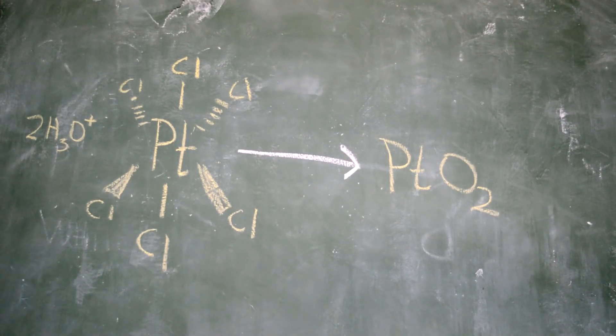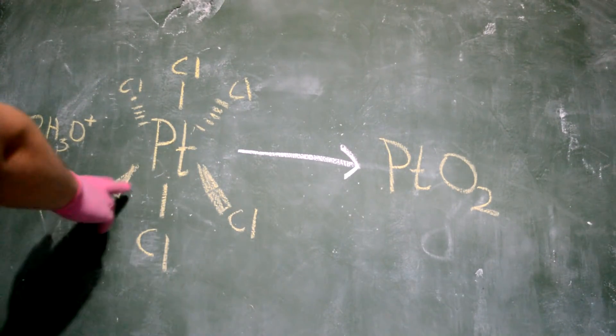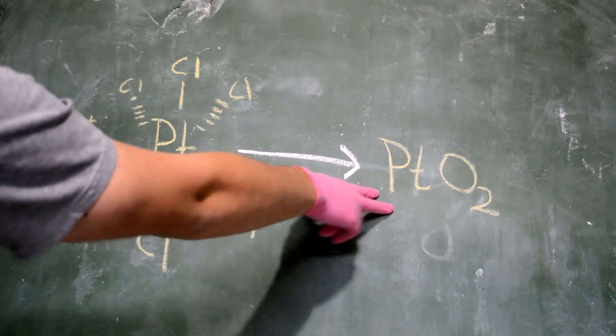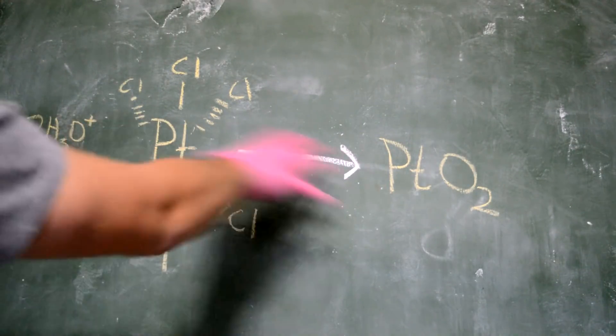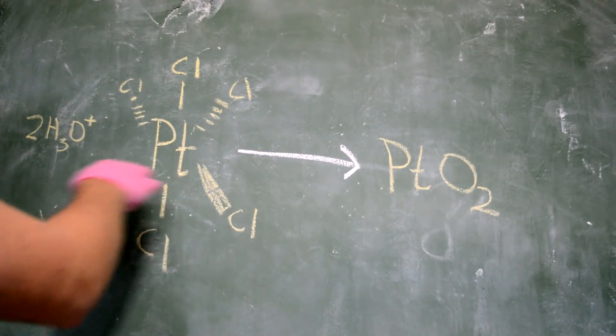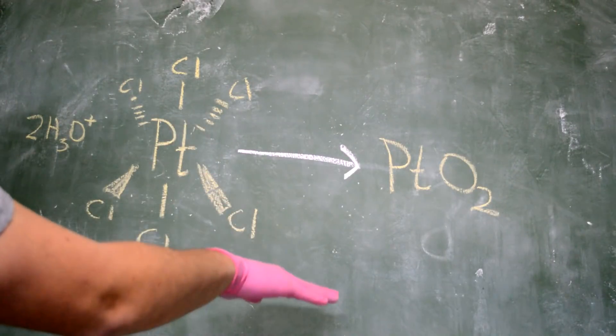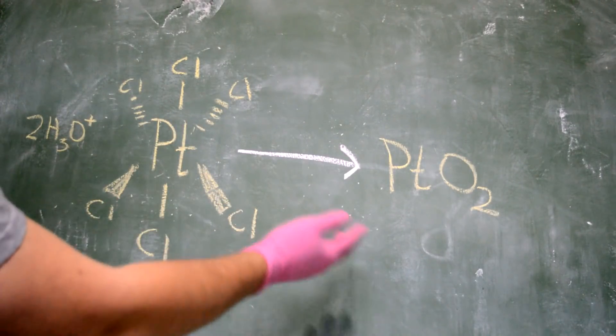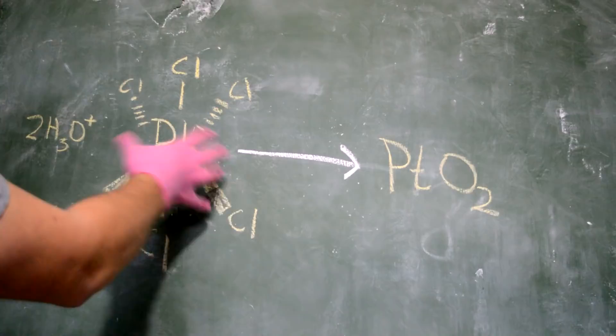All right, hello again. So today we're going to be turning chloroplatinic acid into platinum oxide. And this reaction isn't that easy to do, surprisingly, because platinum is quite far down, just past gold in the periodic table, so the chemistry is a bit different.